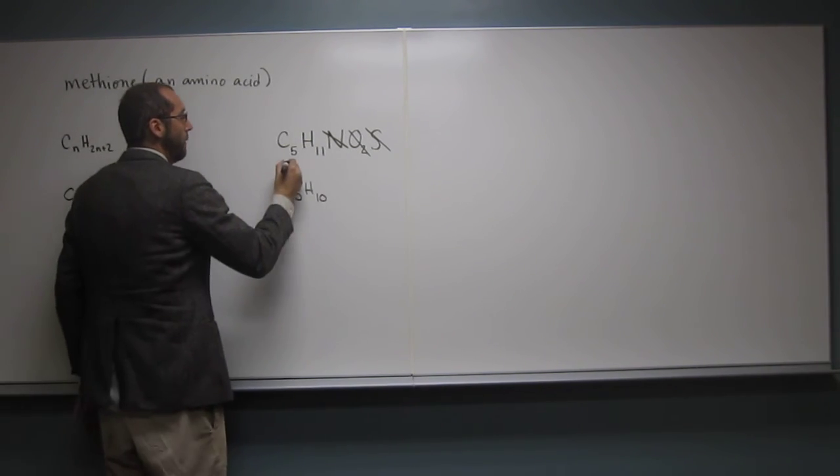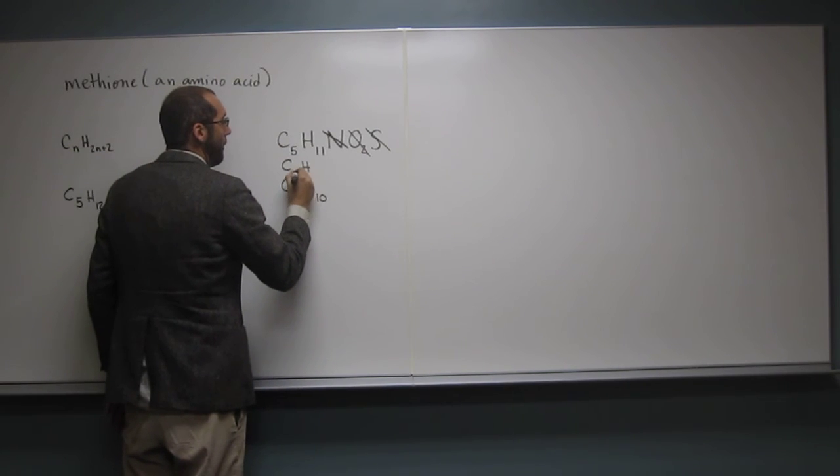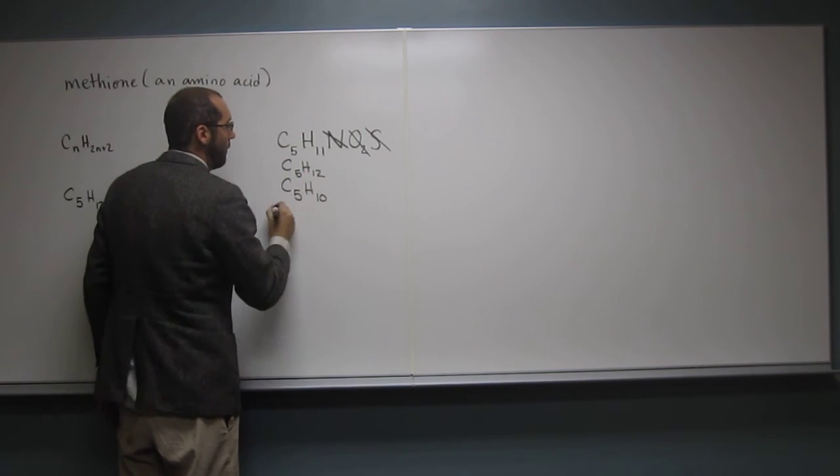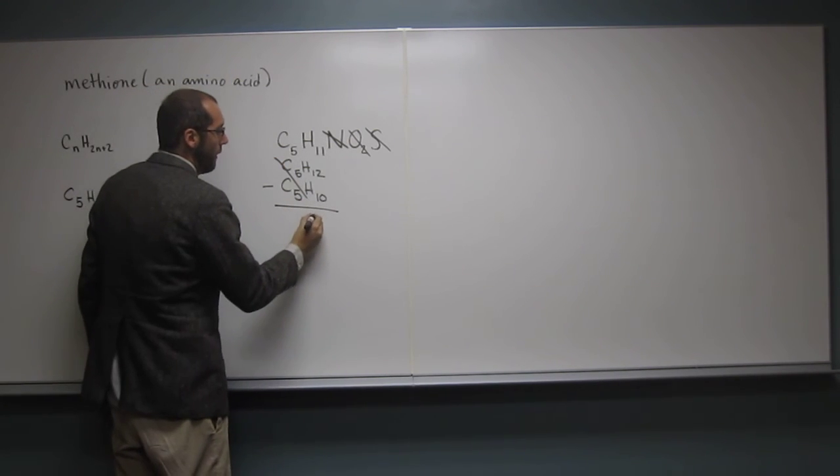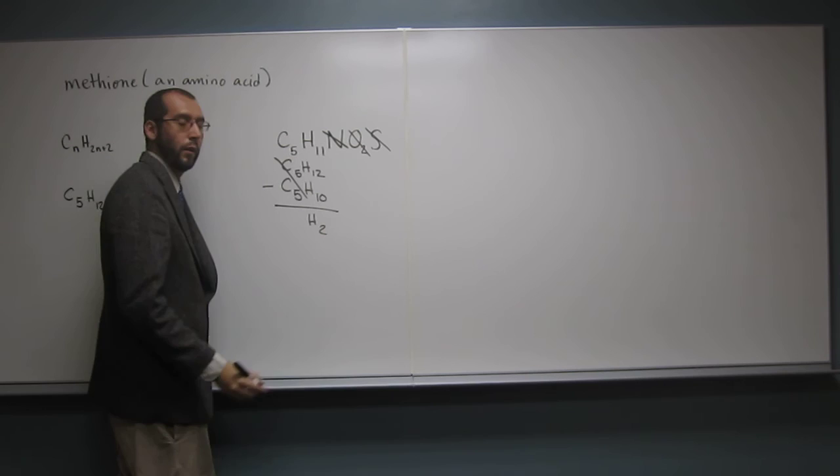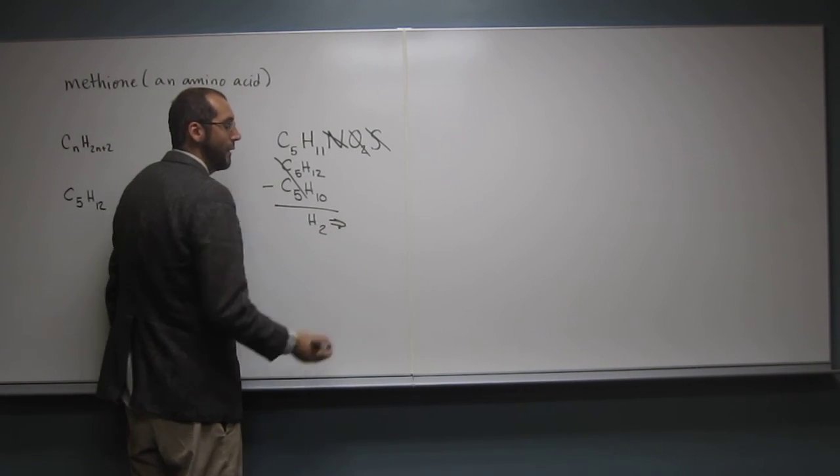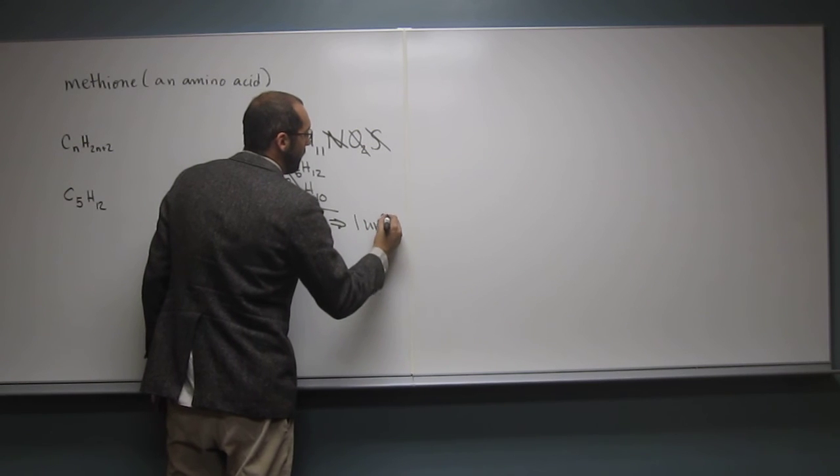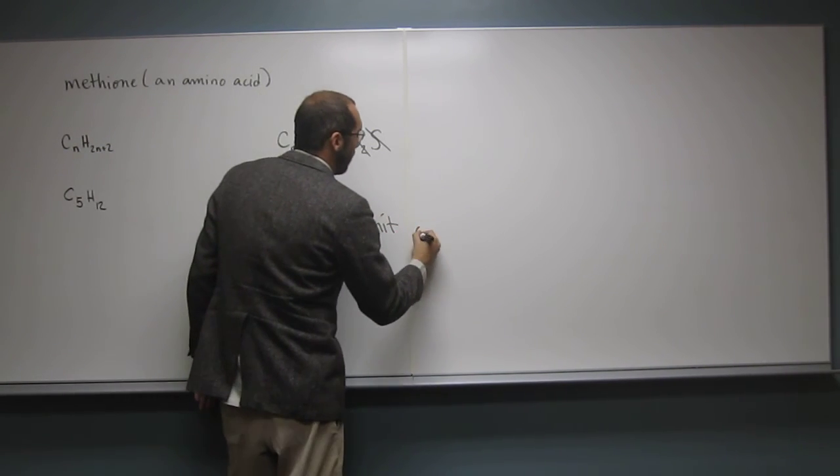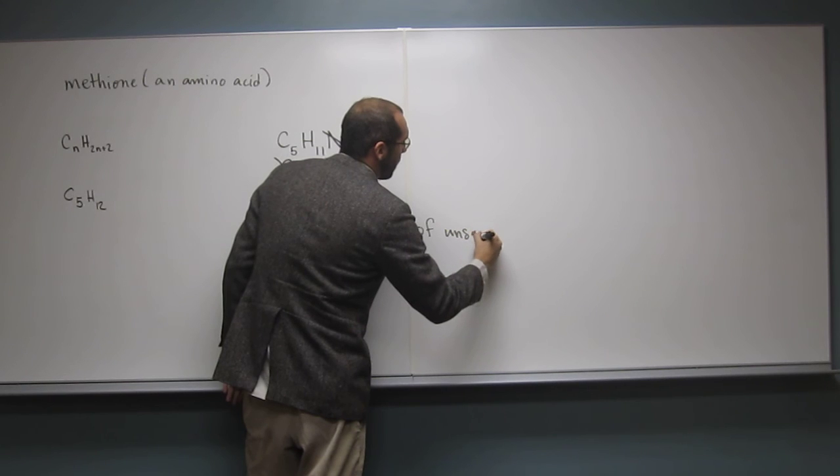So what do we do to figure out how many units of unsaturation we have? We subtract, right? Always the carbons are going to go away. OK, H2, right, for every H2, that's how many units? One unit or one degree of unsaturation.